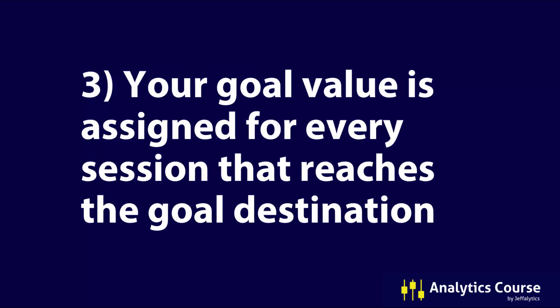Number three: your goal value is assigned for every session that reaches that goal destination. So every single time that somebody reaches that destination URL, the goal value is assigned. Do you want somebody to get that value over and over again? Or is it really meant to be more of a one-off? Is it meant to be a lower number or a higher number? Knowing the fact that every time somebody reaches this destination a goal value is assigned — how does that change your way of thinking?